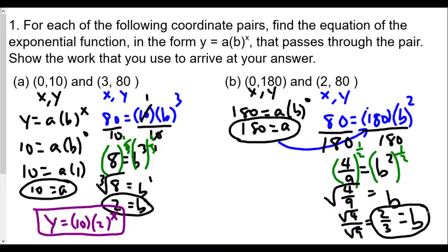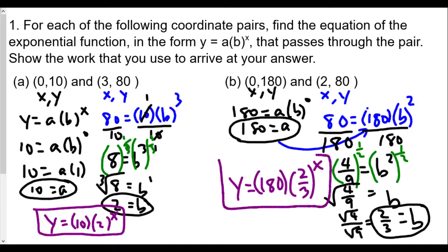Notice that because our base of 2/3 is between 0 and 1, this will be a decreasing function — as x increases, y decreases. This contrasts with part a, where the base was greater than 1, making it an increasing function. Our final function for part b is y = 180 · (2/3)^x.